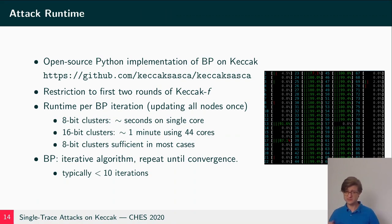Now we implemented all this in Python and we put all the source code on GitHub. For all our attacks we restrict ourselves to the first two rounds of Keccak-f. This is just to keep the runtime a bit lower. We found that the leakage from the rounds later on in Keccak don't really propagate to the input anymore where we have our secret. Belief propagation is an iterative algorithm and each iteration updates each distribution once. If we have 8-bit clusters, then this entire operation takes a couple of seconds on a single core. With 16-bit clusters, the runtime of one BP iteration rises to a minute and it also uses all 44 cores on our cluster.